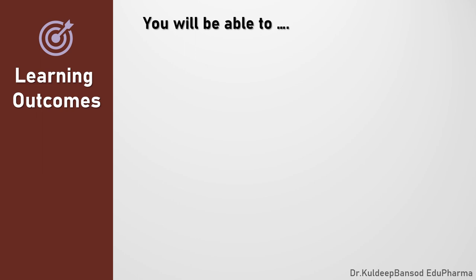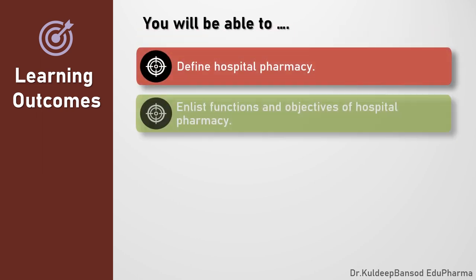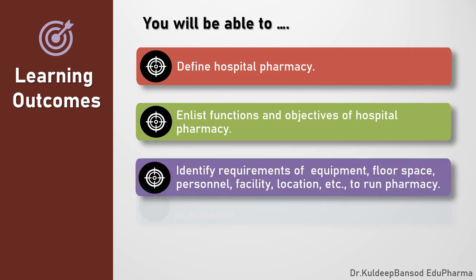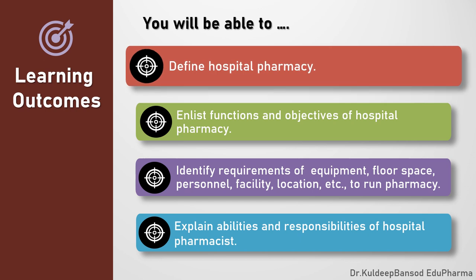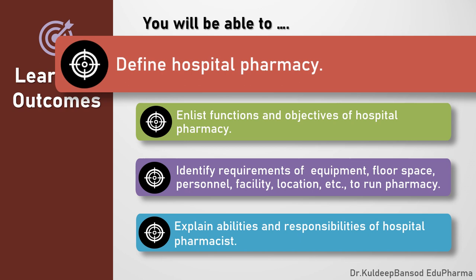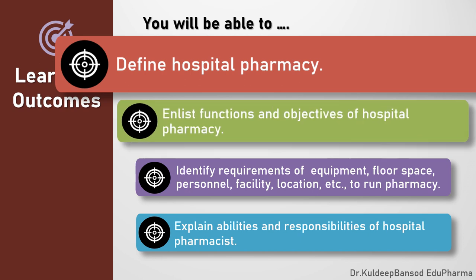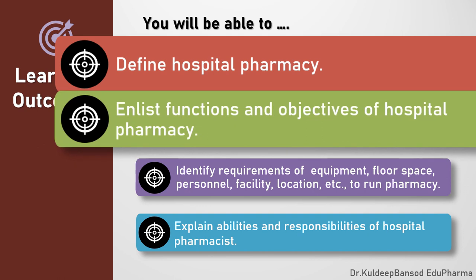After successful watching of this learning dialogue, learners will be able to define Hospital Pharmacy, enlist functions and objectives of Hospital Pharmacy, identify requirements of equipment, floor space, personnel, facility, and location to run the Hospital Pharmacy, and explain abilities and responsibilities of Hospital Pharmacists. This is part one, and in this part we are emphasizing on two learning outcomes: define Hospital Pharmacy, and enlist functions of Hospital Pharmacy and its objectives.